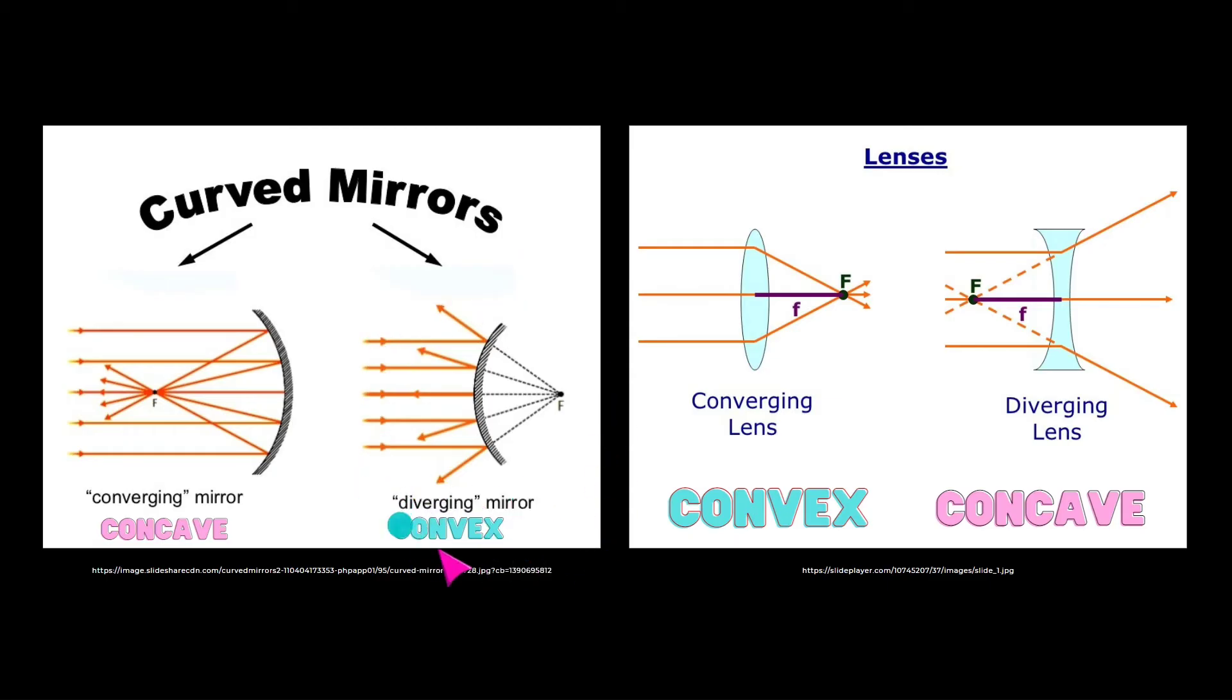For convex mirror, if you notice, light hits the mirror, but the light diverges or gets diffused. For lenses, our diverging lens is the concave lens. If you see, light hits here and diverges going there. And don't forget to always extend.